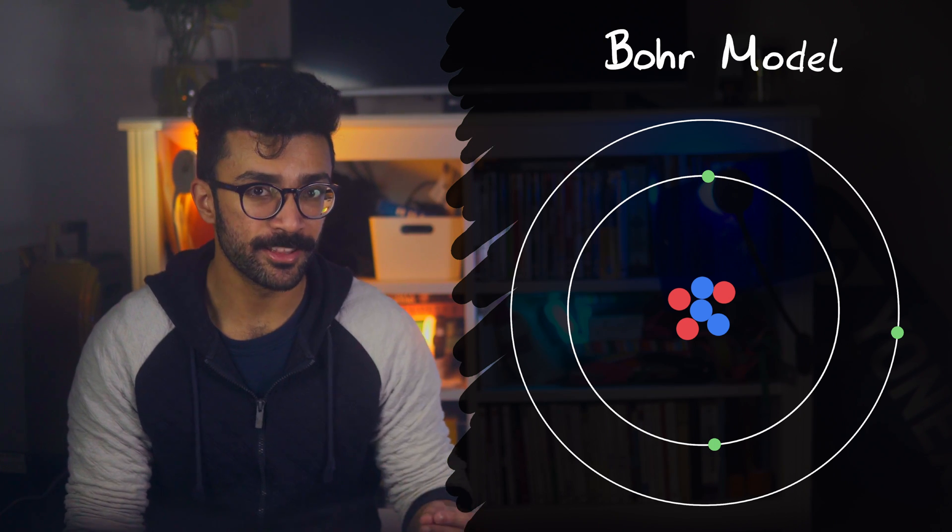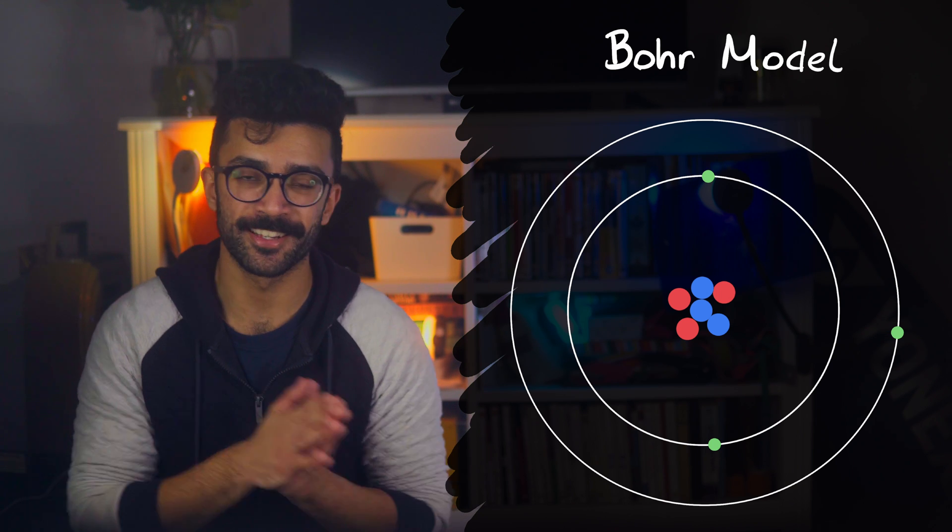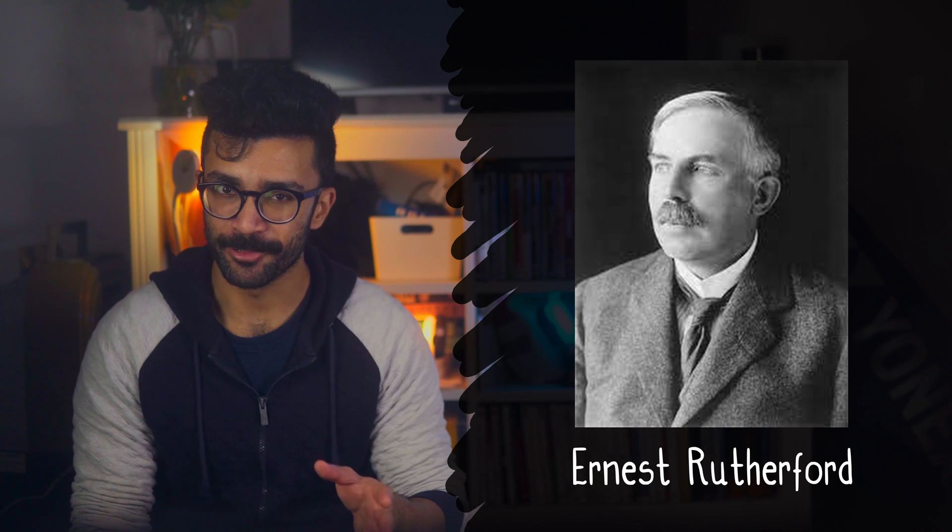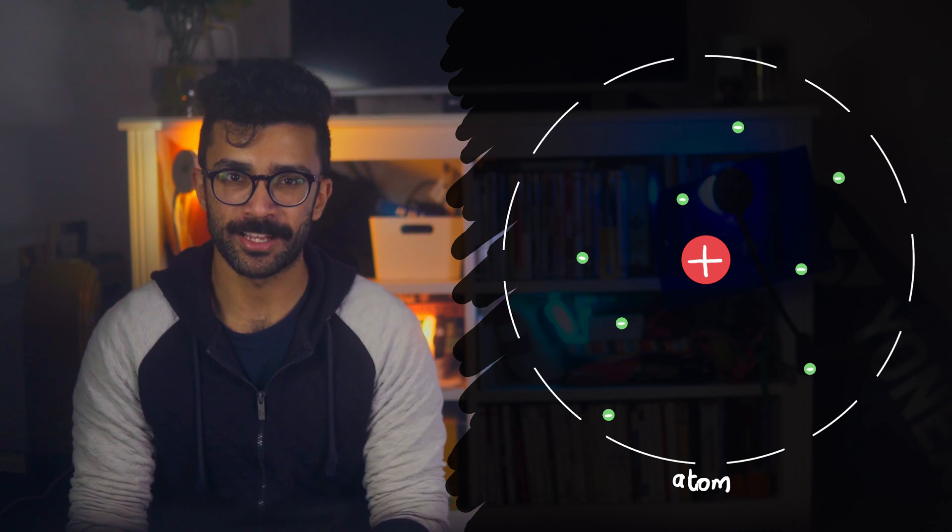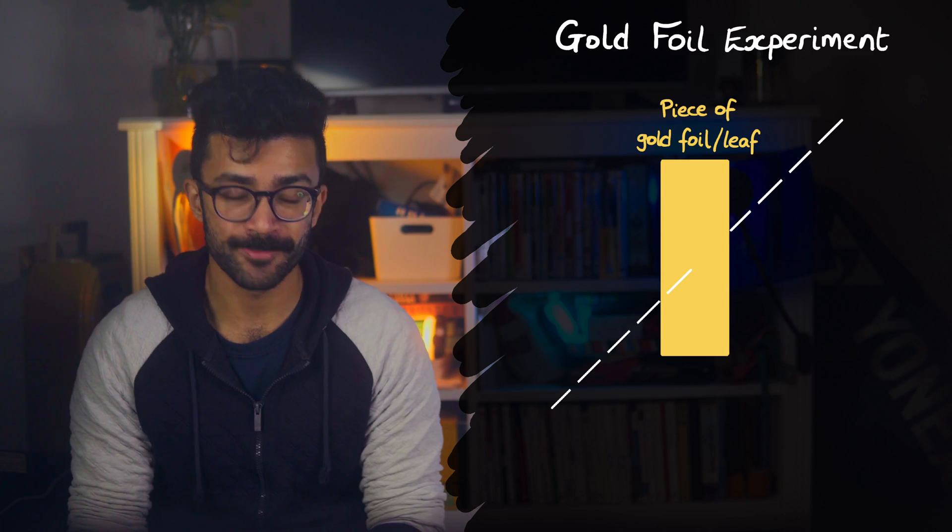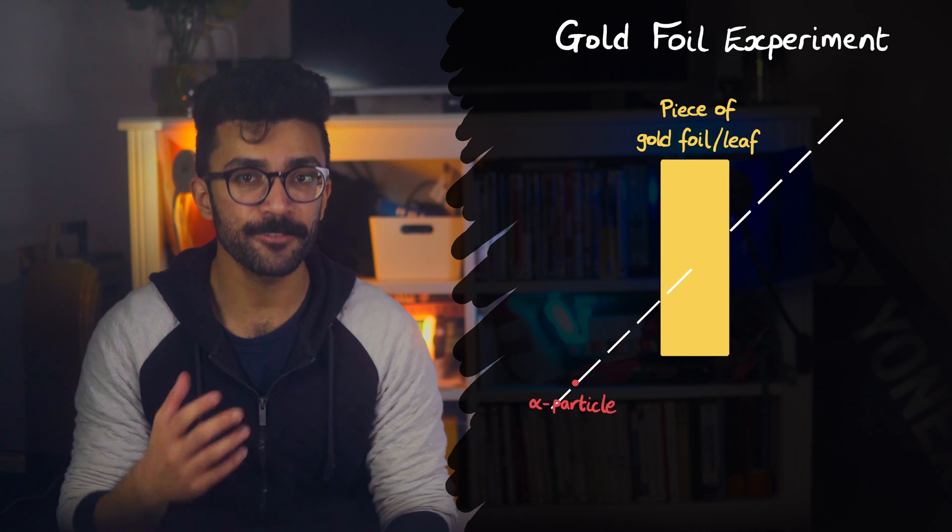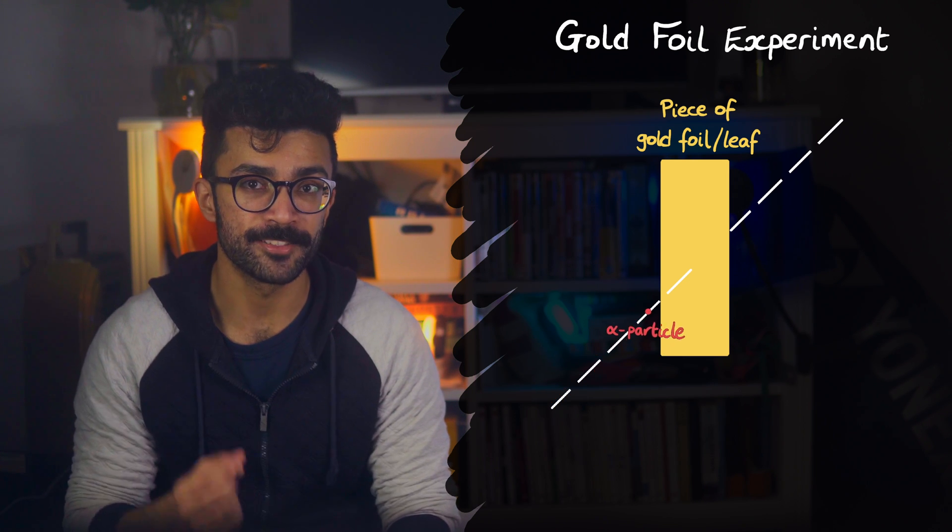Niels Bohr worked closely with, and learned from, another brilliant scientist called Ernest Rutherford. He had realized, through an experiment he devised with his students, that atoms are formed of negatively charged particles surrounding a very intensely positive region at the center, with most of the atom being empty space. This experiment was known as the gold foil experiment, since they fired positively charged alpha particles at a thin piece of gold foil.